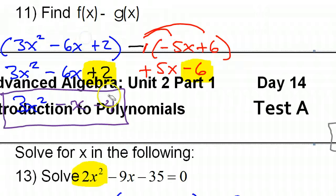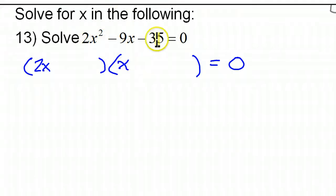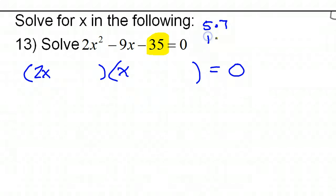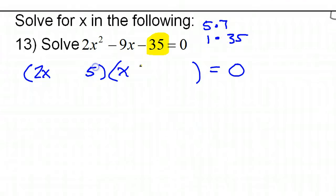Then we jump over and look at the 35. Don't even worry about the sign yet, just look at the 35. There are only two ways to factor 35. The most obvious one is 5 times 7, so that's the most likely. But if somehow that fails, we'll turn to 1 times 35. Starting with 5 times 7 — if this doesn't work, we'll try 7 here and 5 here.